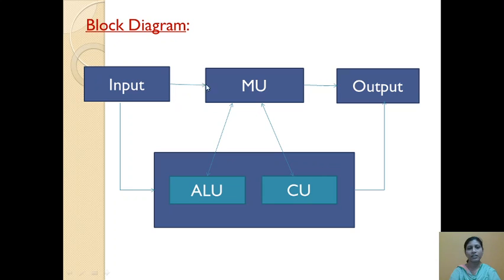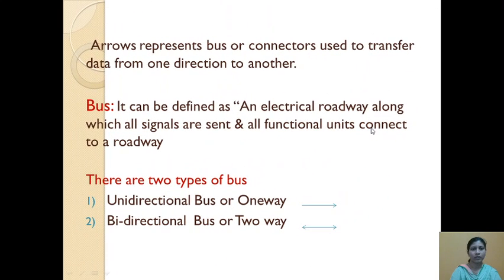A one-way bus is called a unidirectional bus, and a two-way bus is called a bidirectional bus. The unidirectional bus transfers data in only one direction, while the bidirectional bus allows data to travel in both directions.